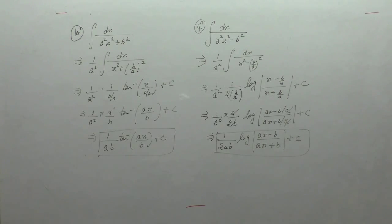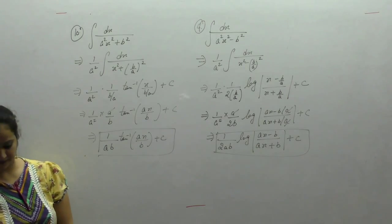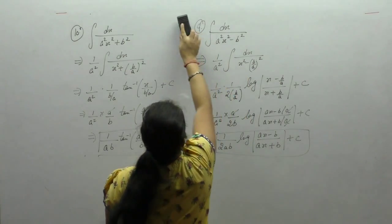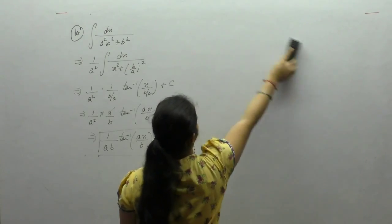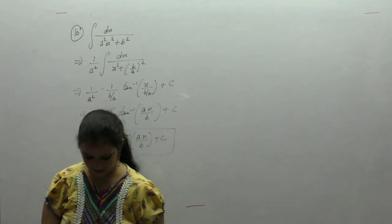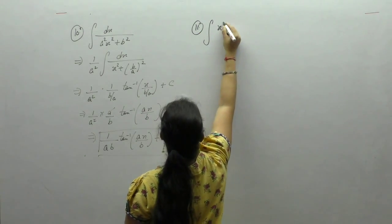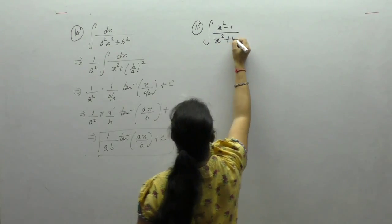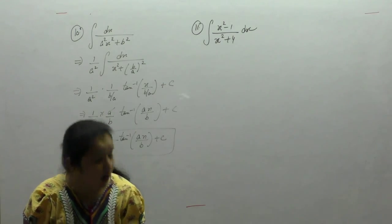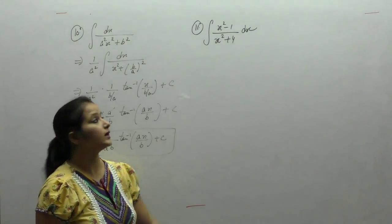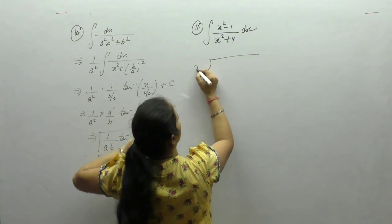Now consider 1 by (x square plus 4). Here the degree of numerator and denominator is equal, so in the first step we will divide it.